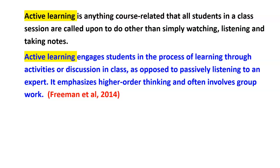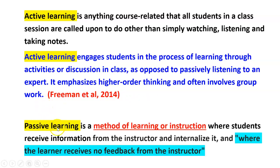Freeman et al. defined active learning in 2014. Active learning is student-centric learning — making the student responsible for their learning activity and involving them in classroom discussion so that they can learn effectively. Whereas passive learning is lecture-centric or teacher-centric learning, a method where students receive information from the instructor and internalize it, with no feedback from the instructor and no opportunity for the student to interact with the teacher.